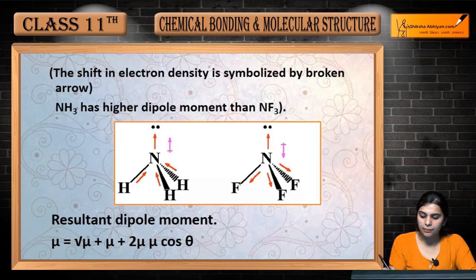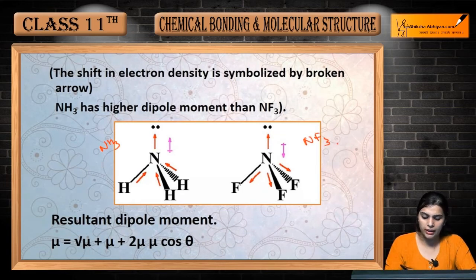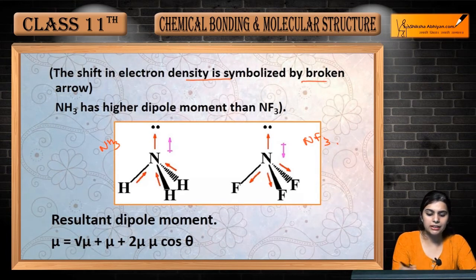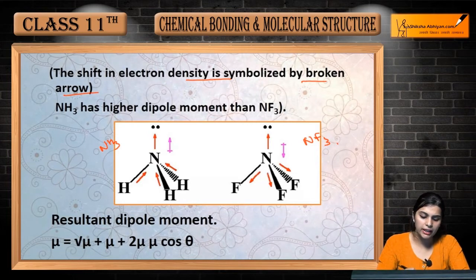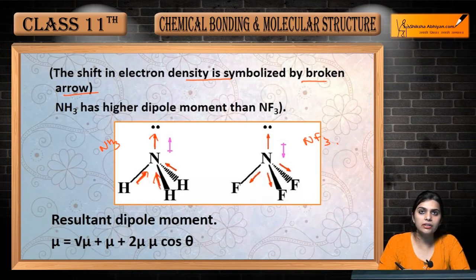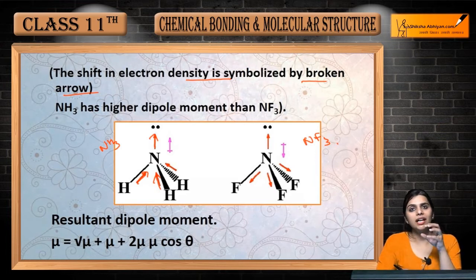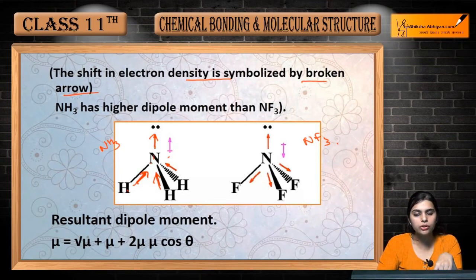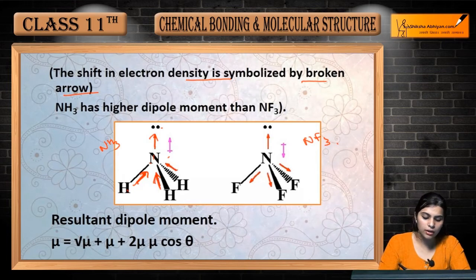Yeh jo aap saamne dekh rahe hain yeh ek figure hai — yahan pe yeh NH3 molecule hai aur yeh NF3 molecule. Yeh inka saamne structure draw kiya, yahan pe inka dipole moment calculate karenge. The shift in electron density is symbolized by a broken arrow. Yeh jo arrows bane hain yeh kya show kar rahe hain ki jo humara dipole moment hai, yeh jo humari electrons ki density ki shift hai, woh kahan se kahan ho rahi hai.